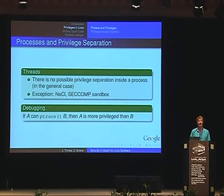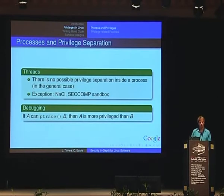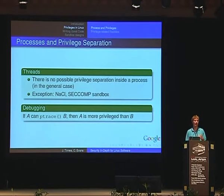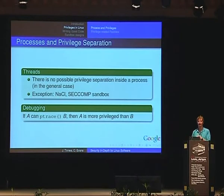Regarding threads: since the process is the privilege boundary, there is usually no possible privilege separation inside a process. We will see one exception today in the second sandbox we introduce later; another exists in Google's Native Client. Debugging is also quite interesting: if process A can debug or use the ptrace system call on process B, then A is more privileged than B, because it can make B do whatever it wants.